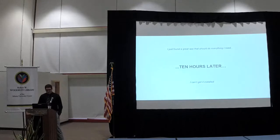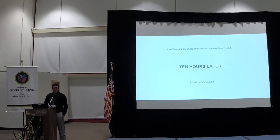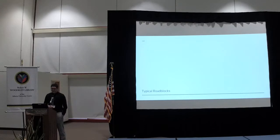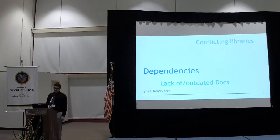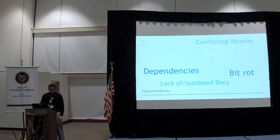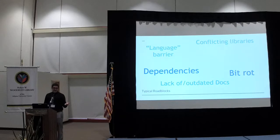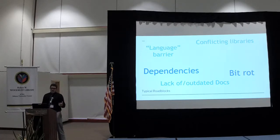How many of you have run into this scenario? This is a pretty common problem when working with open source software — you just can't get the thing to install. There are tons of roadblocks: the most common is dependencies. The more dependencies, the more they start conflicting — it uses this version of Node but this version of Angular, and they butt heads. Another common problem is a lack of or outdated documentation — a really old open source repository. And finally, a language barrier, which could mean documentation in French or German, or it could mean the code is written in Ruby and you just don't know Ruby.